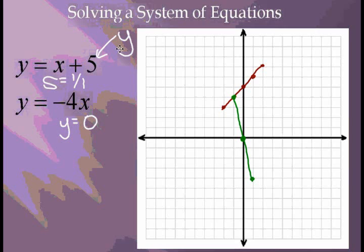The point where both equations meet is at negative 1, 4. Negative 1, 4 is the solution of the linear equations.